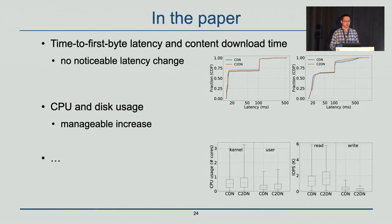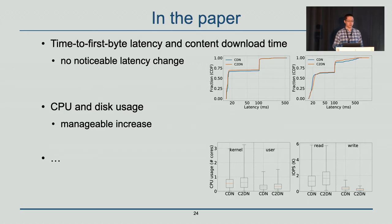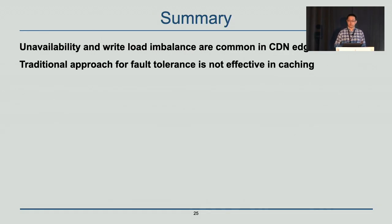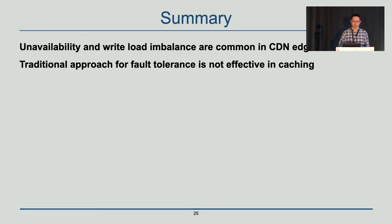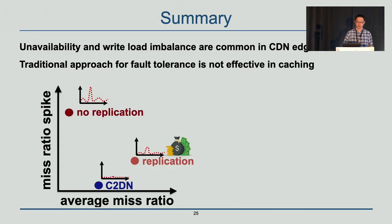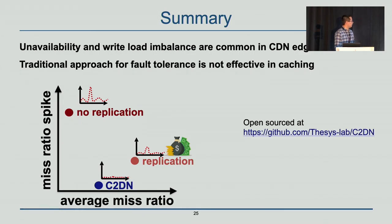In the paper we further show time-to-first-byte latency and content download time, and observe that latency has no noticeable change. We also show CPU and disk usage, and observe that both are slightly increased. As a summary: unavailability and write load imbalance are common in CDN edge clusters, and traditional approaches for fault tolerance are not effective in caching. We built C2DN, which provides both small miss ratio and small miss ratio spike. We have open-sourced our system at the provided URL. With that, I'm happy to take any questions.